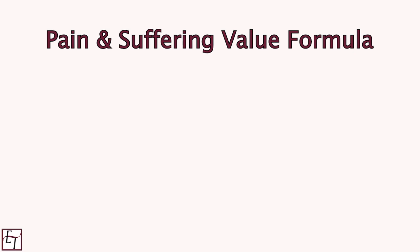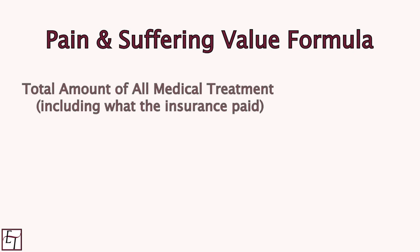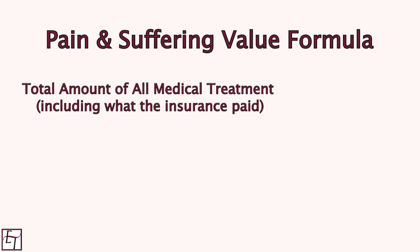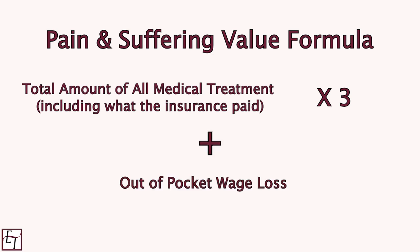You take your total amount of all of your medical bills from all of your treatment — not just your co-pays and deductibles, but the total amount of the bill, including what the insurance paid — you multiply that number by three. We call it three times meds, and then you add to that your out-of-pocket wage loss.